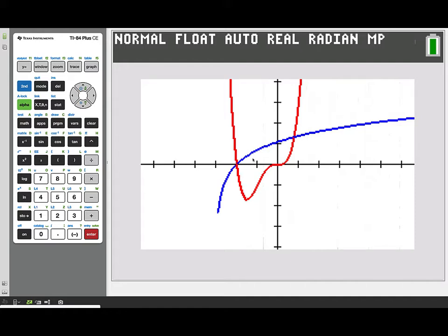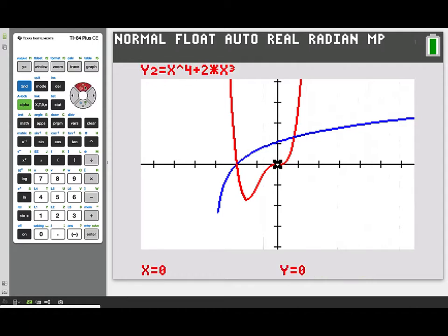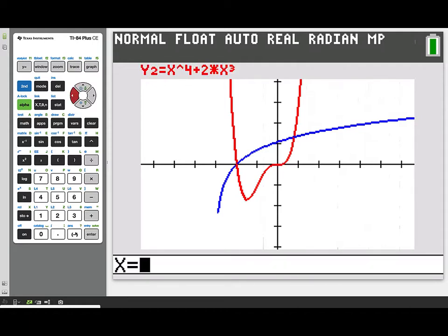Here we can see the region that's enclosed by those two graphs. The blue graph is the natural log of x plus 3, and the red graph is x to the fourth plus 2x cubed.